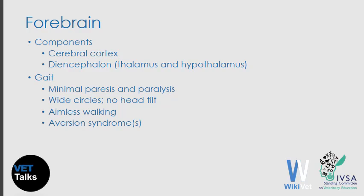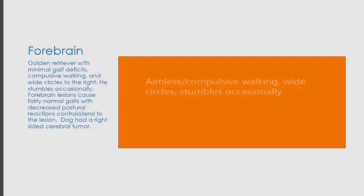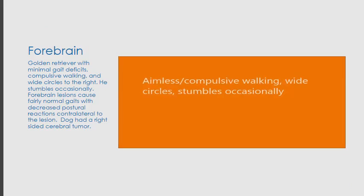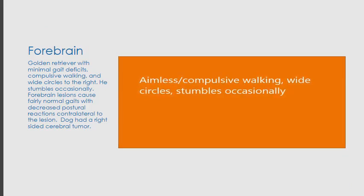Characteristic forebrain gaits include minimal paresis or paralysis. Animals tend to walk in wide circles, usually towards the side of the lesion. They have no head tilt. Animals may have aimless walking, and various aversion syndromes may also be seen. The following is a video of a patient demonstrating these signs.